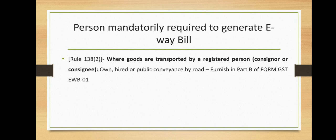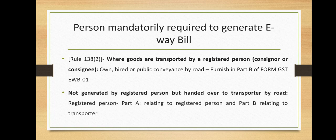Who is mandatorily required to generate an e-way bill? Where the goods are transported by a registered person, whether as a consigner or recipient as the consignee, whether in his own conveyance or a hired one or a public conveyance by road, the said person shall have to generate the e-way bill by furnishing the information in Part B on the common portal as per Rule 138 clause 2. Where the e-way bill is not generated by the registered person and the goods are handed over to the transporter for transportation of goods by road, then the registered person shall furnish the information relating to the transporter in Part B on the common portal, and the e-way bill shall be generated by the transporter on the said portal on the basis of the information furnished by the registered person.